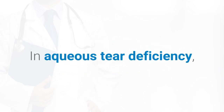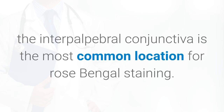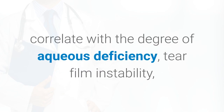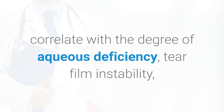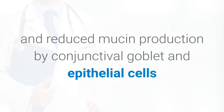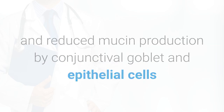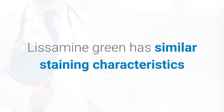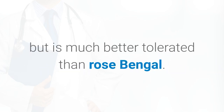In aqueous tear deficiency, the interpalpebral conjunctiva is the most common location for rose bengal staining. The severity of staining has been shown to correlate with the degree of aqueous deficiency, tear film instability, and reduced mucin production by conjunctival goblet and epithelial cells.